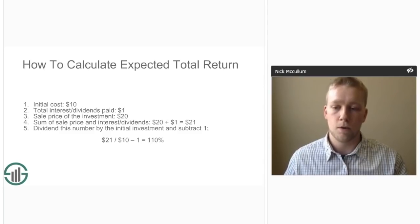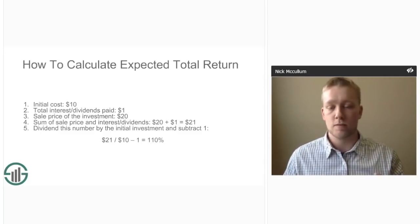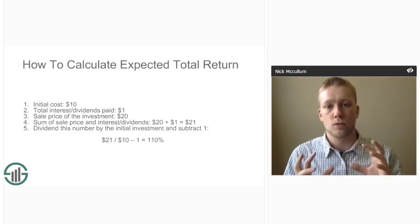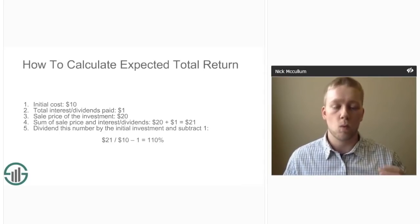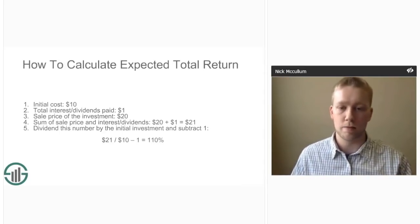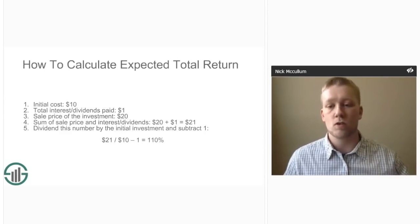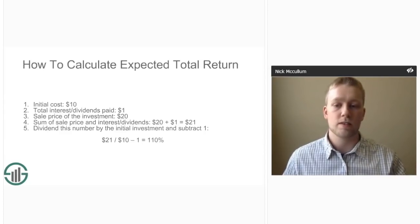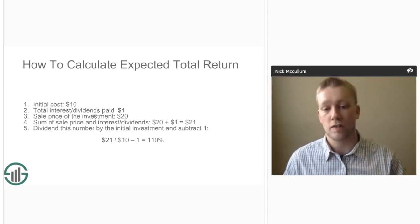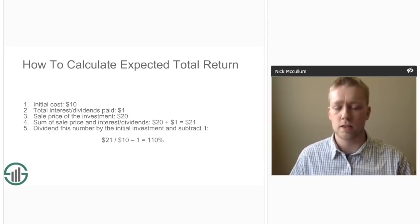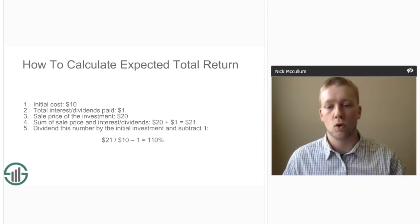To provide an example: imagine you had an investment whose initial cost was $10, and throughout the lifetime of that investment you collected $1 of dividend payments. At the end of the investment you sold it for $20, which means the sum of your sale price and dividends was $21. You calculate the expected return by dividing $21 by $10 and then subtracting one, giving you a total return of 110%.